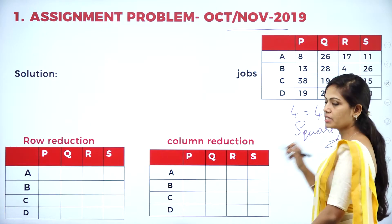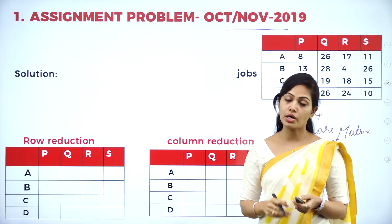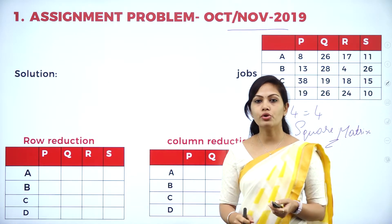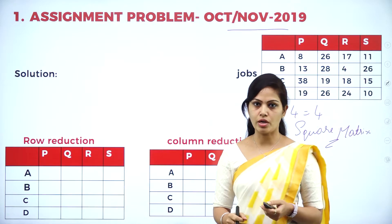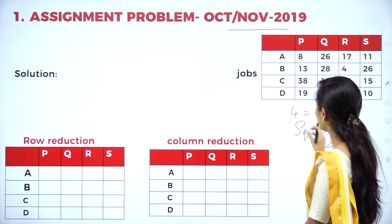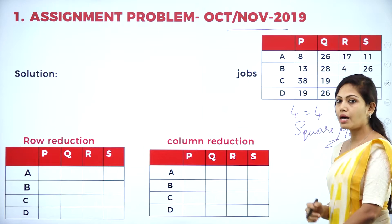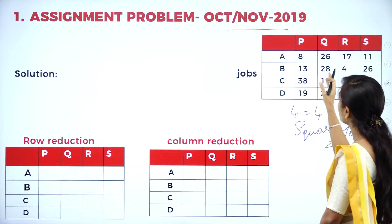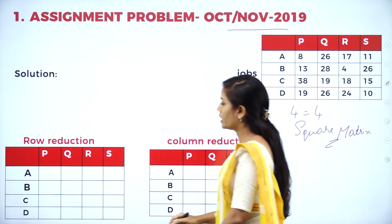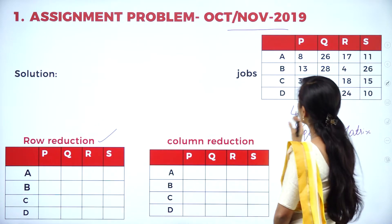If it is a square matrix, it is a balanced problem. Otherwise you can add a dummy row or dummy column. After confirming the balance, the next step in the assignment method is to find the row reduction. So the first step is row reduction.